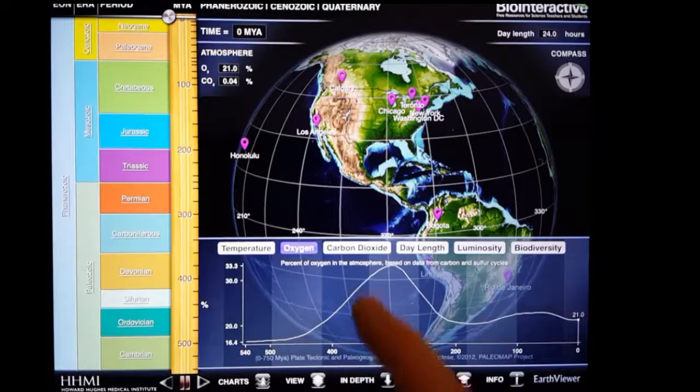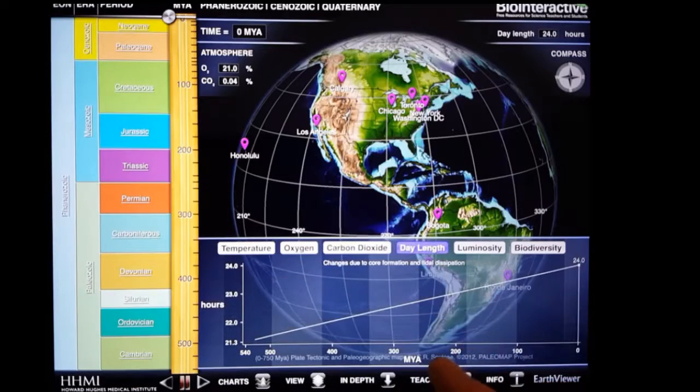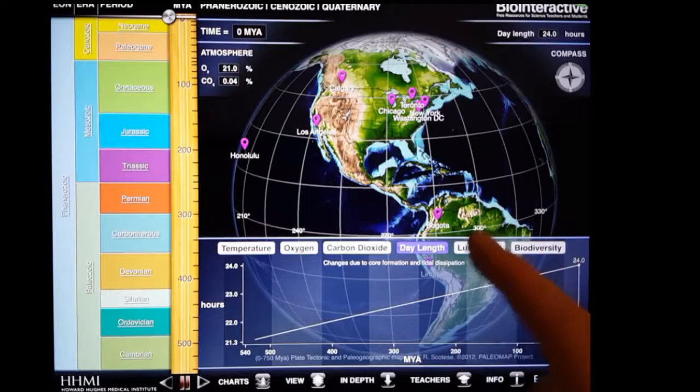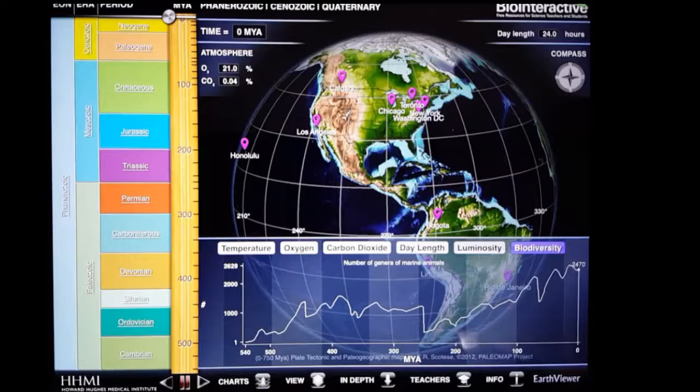oxygen, carbon dioxide, length of a day, luminosity, and biodiversity. From this view, I can see how different components of the Earth changed over its 4.6 billion year lifespan.